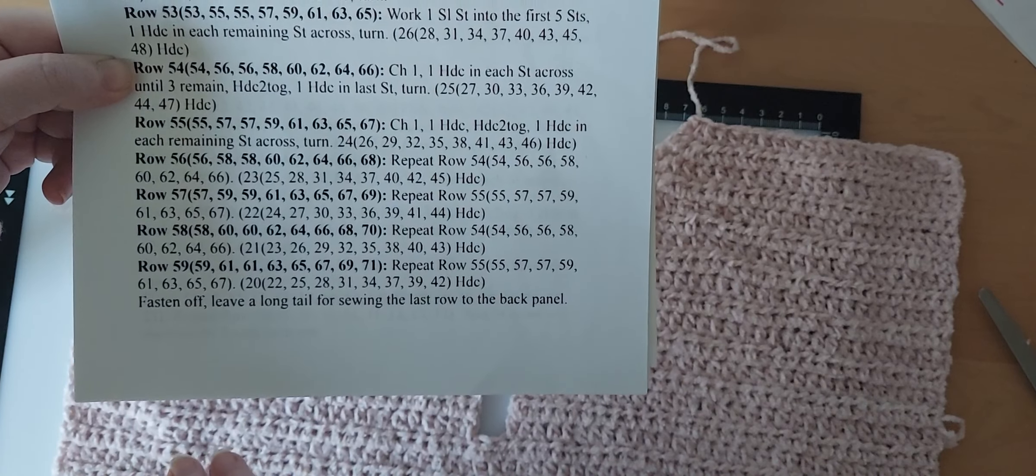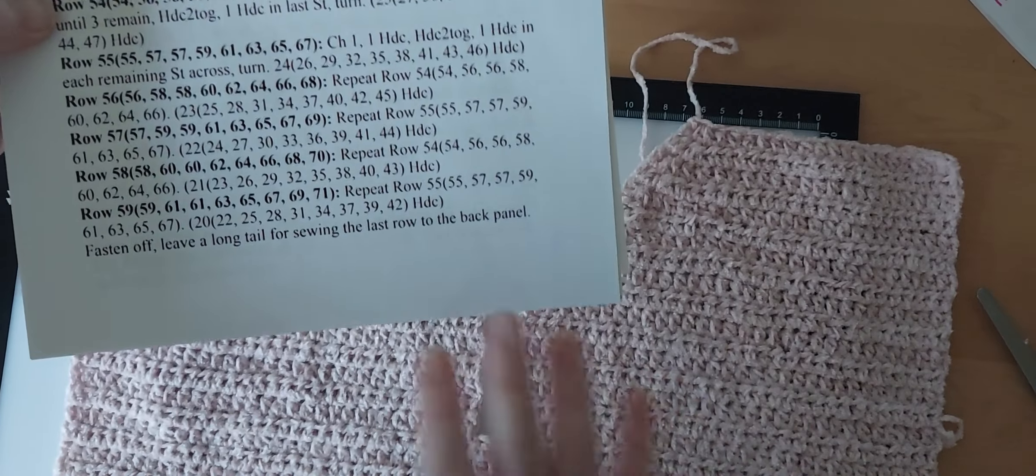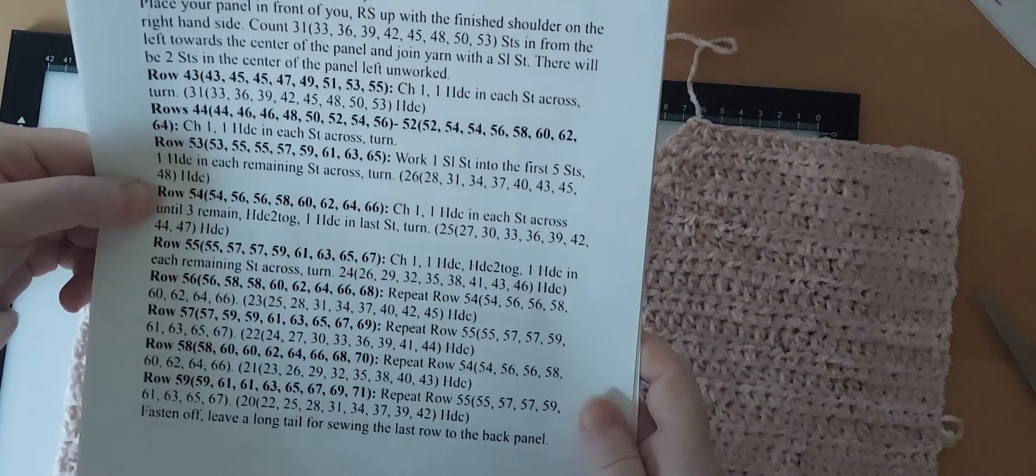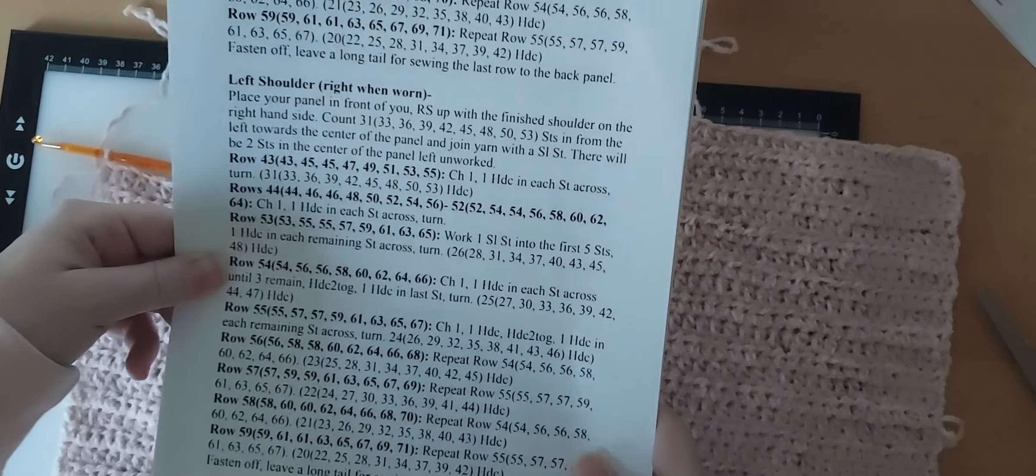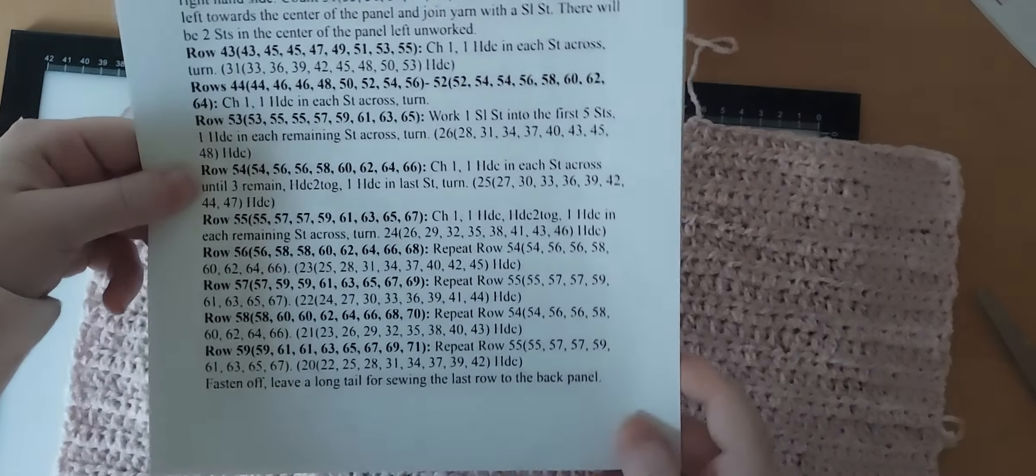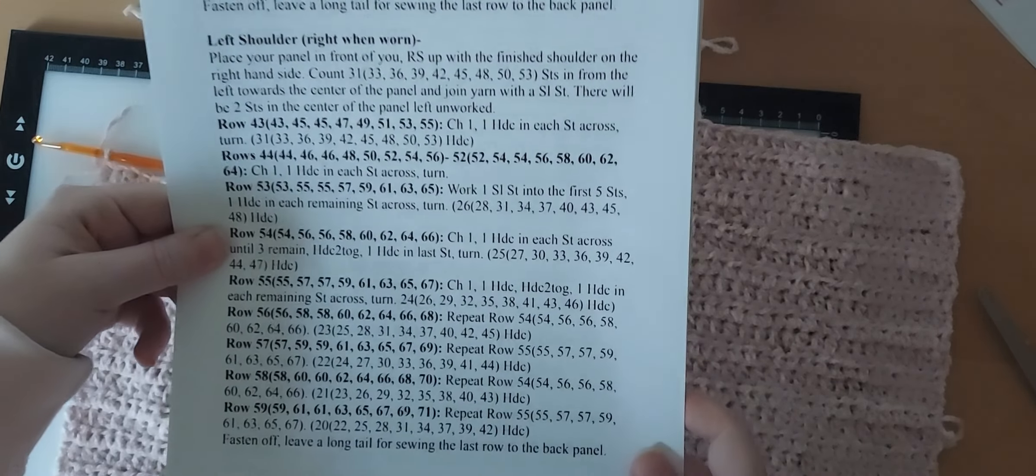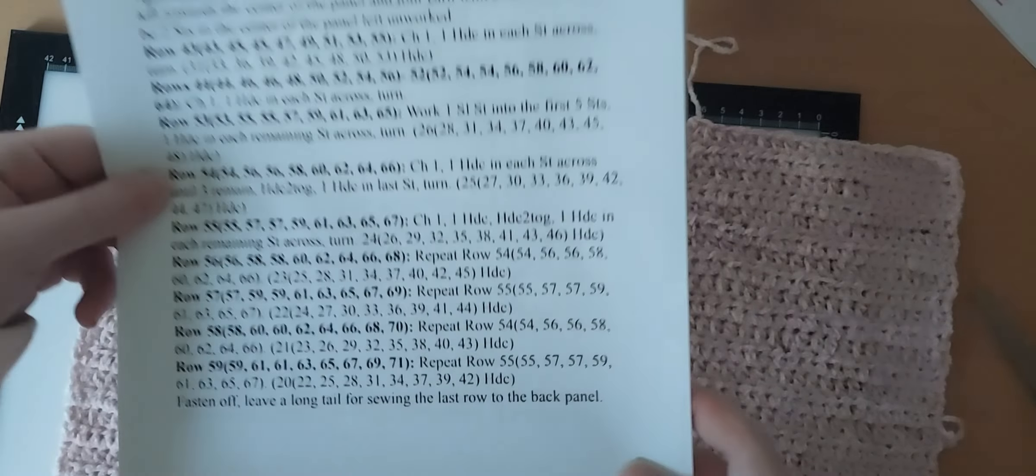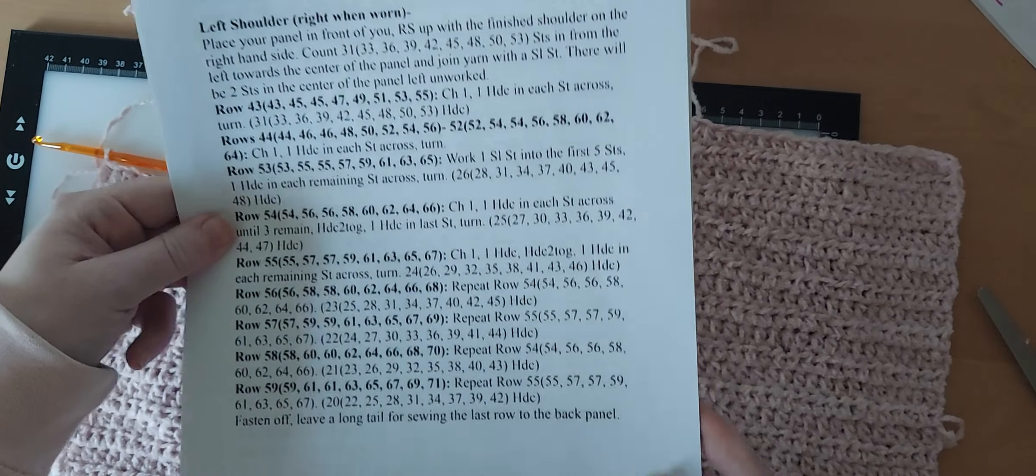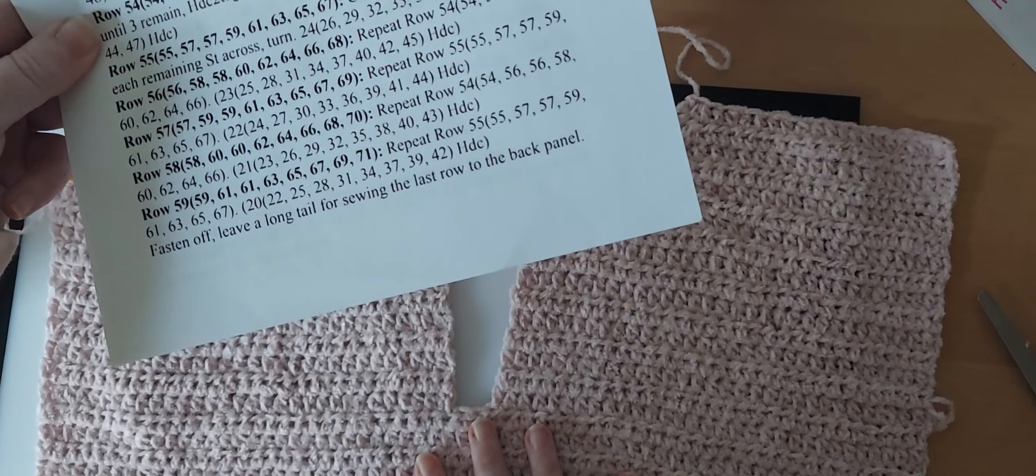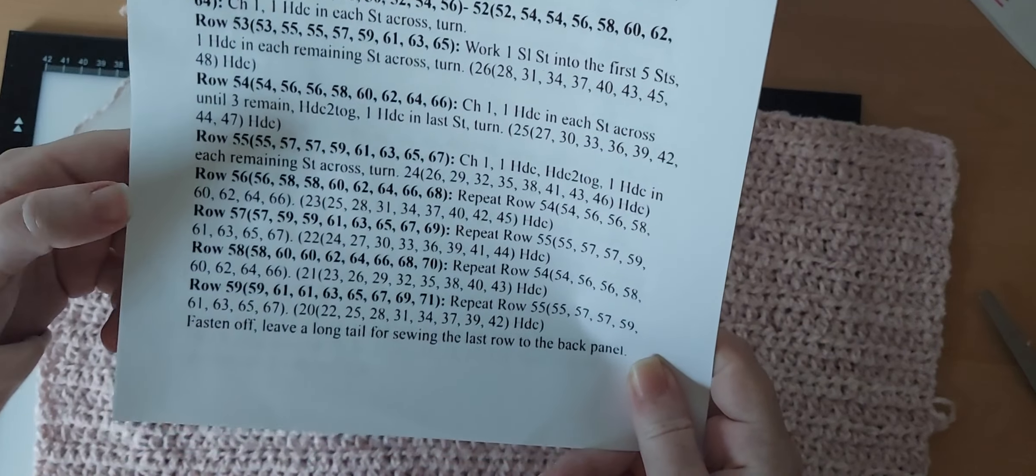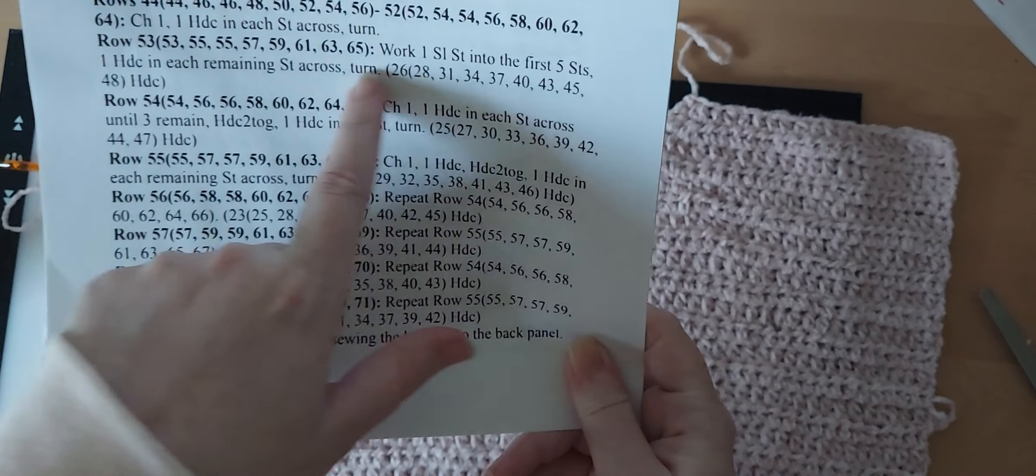So you guys should be able to follow from here down. You're reading the instructions just like we did in the previous video. You're repeating the same rows just like we did in part two. If you're stuck, or if you're having a hard time, or if you can't figure out the row numbers, if the numbers are confusing you, please do not hesitate to message me, comment on the video. I will make sure that I help you finish this part up. But that's it.